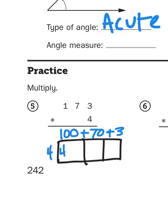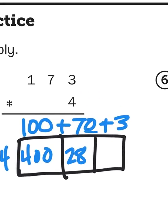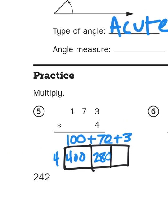Four times a hundred, of course, is four hundreds. Four times seven is going to give me twenty-eight. So four times seven tens is going to give me twenty-eight tens, or two hundred and eighty. And, of course, three times four is twelve.